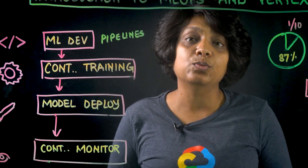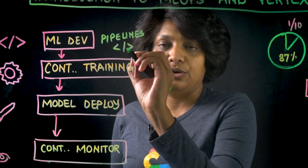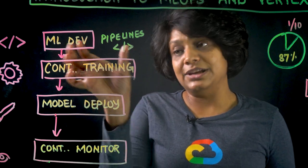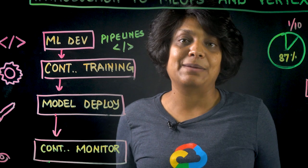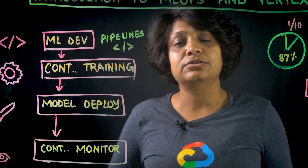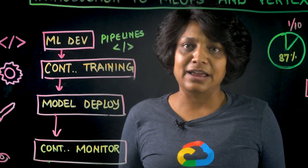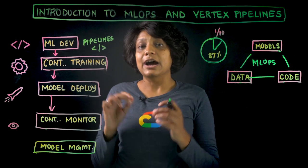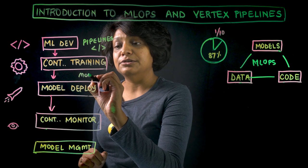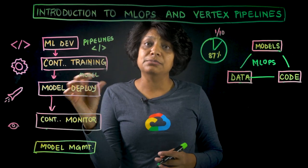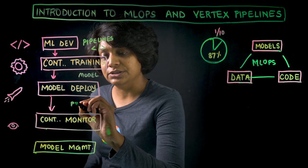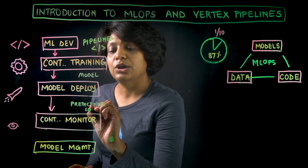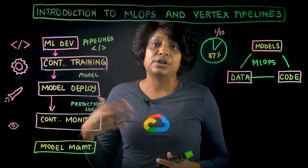The output of the ML development step is the trained pipeline source code, which you feed into the continuous training phase. The pipeline generated earlier can be treated like a software application — version controlled and deployed through a CI/CD process as a training pipeline that can be invoked with new data or parameters in production as needed. The output of this step is your trained model, and then the output of the model deployment step is your live predictions, which can include not just predictions but also logs and other records of production inferences.